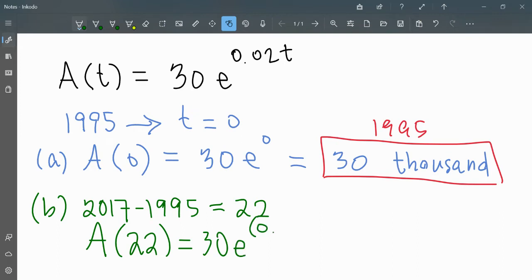In your calculator, we will need to put parentheses around the exponent: 30 times e to the parentheses, 0.02 times 22, close the parentheses. And that population is 46,600.